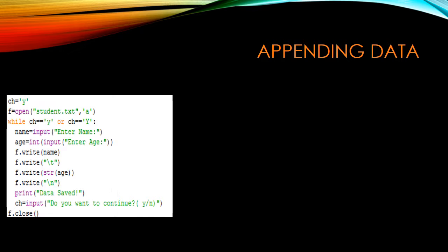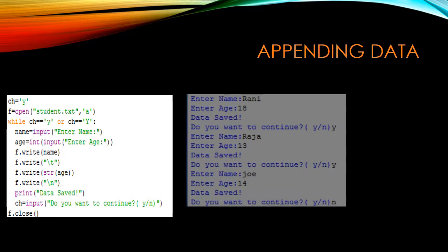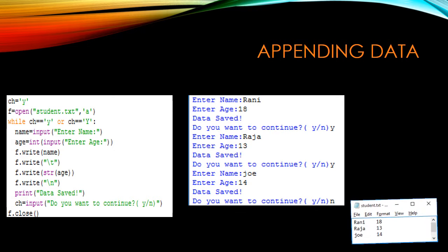First, we are going to see how to append data. We are opening the file student.txt in append mode and getting runtime input for name and age, which will be written into the file student.txt. If you want to continue, we can give 'y', so continuously we can give data and it will be stored.